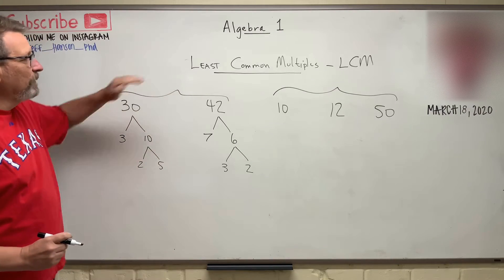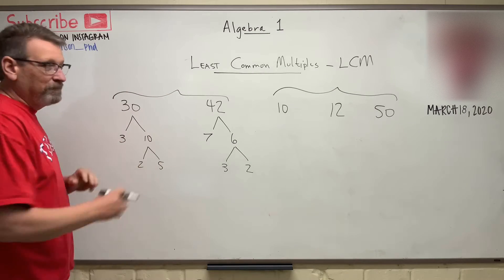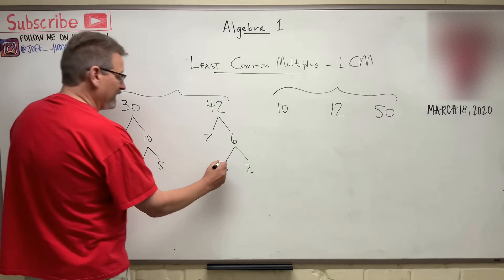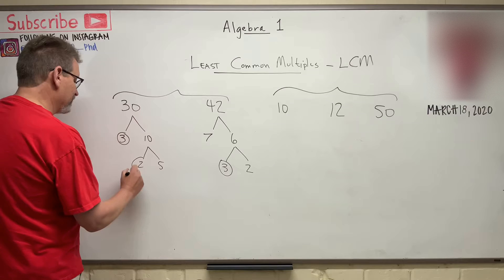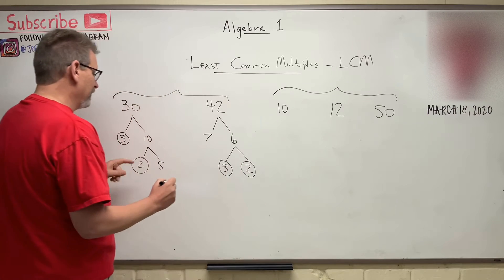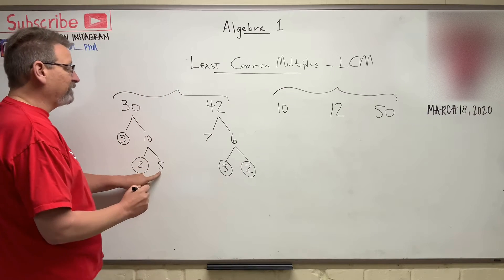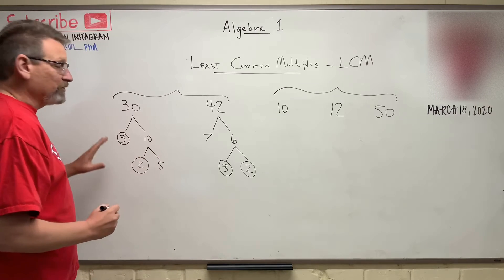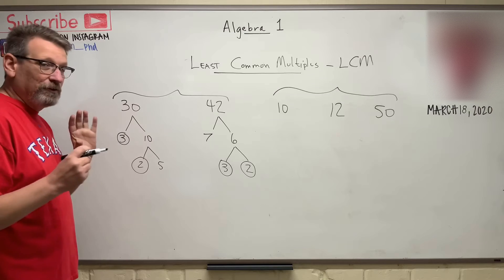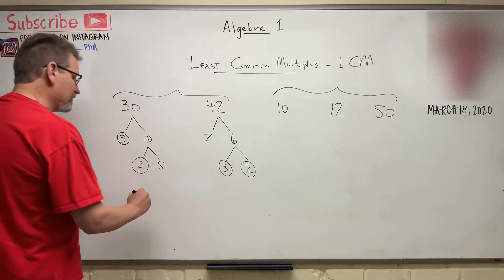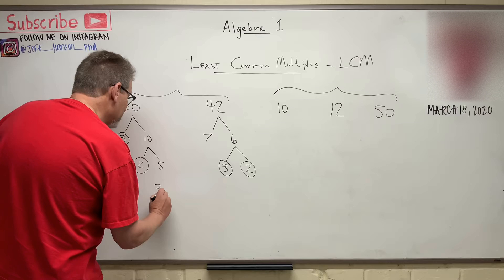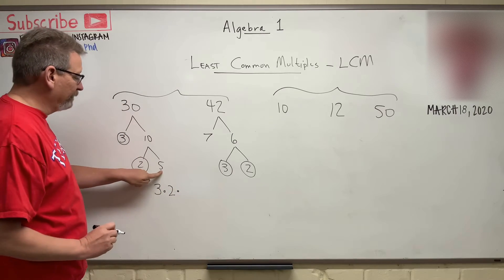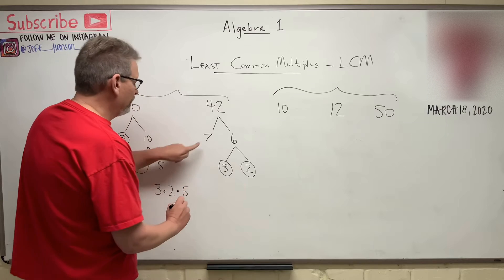Now to find the least common multiple, we're looking for common things in both of these. So this guy has a 3, this guy has a 3. This guy has a 2, that guy has a 2. And this guy has a 5, and that guy has a 7. Those don't go together, do they? So the least common multiple is we're looking at those things that each of them share in common. We'll write those first.